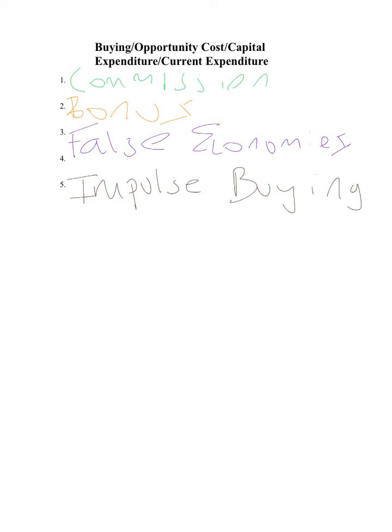The next one on the list is opportunity cost. Opportunity cost is when you have two items in front of you and you choose one item over another — you basically lose out on the opportunity to have one of those items. For example, you have a euro and you want to buy chocolate. You can either buy a Mars or a Twix. You choose the Mars — your opportunity cost is the Twix, because you've lost out on the opportunity of having that Twix.